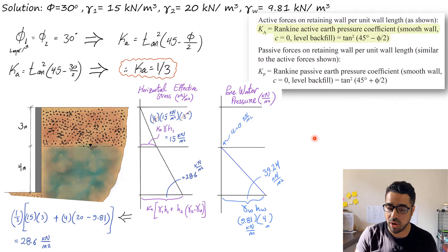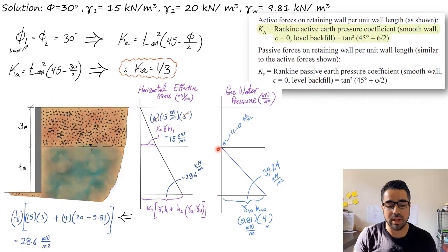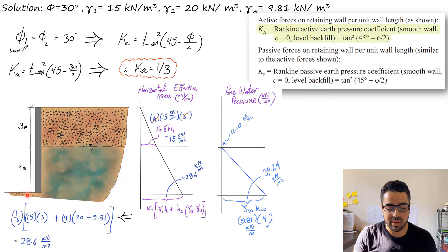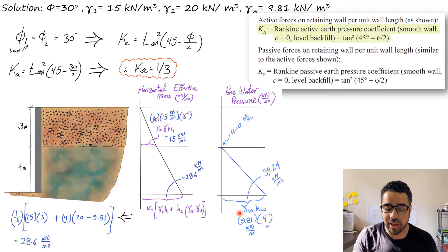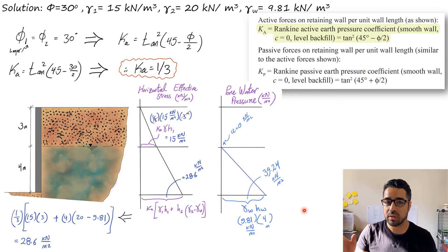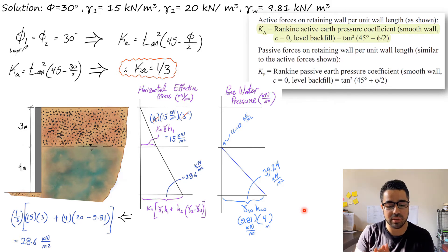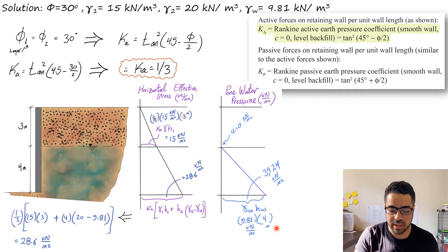Now we find the stress from the water. Since Layer 1 has no water, it is zero there. Water pressure starts at depth 3 m and increases down to depth 7 m — so the water depth is 4 m. Since Ka does not apply to water, the vertical stress equals the horizontal stress for water: σ_water = γ_water × h_water = 9.81 × 4 = 39.24 kN/m².